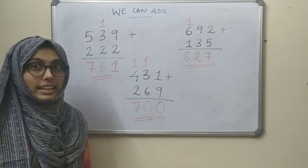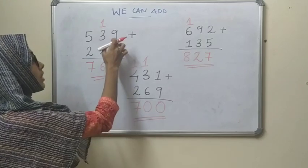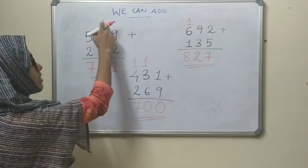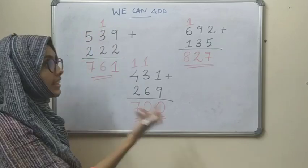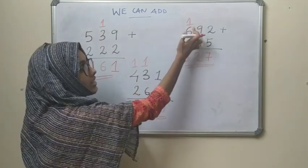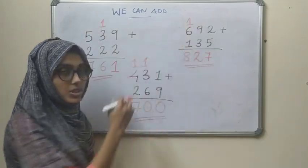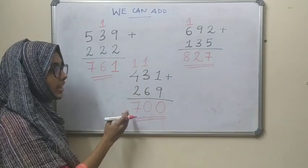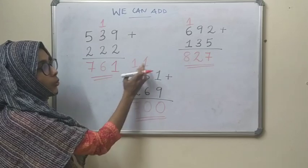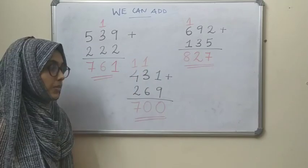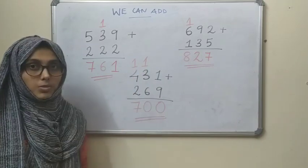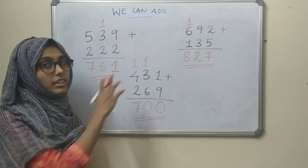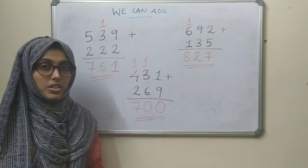So these are the three types of addition. First type: 1 is carried to the tens place. Second type: 1 is carried to the hundreds place. Third type: 1 is carried in both cases. This is a review of the three types of addition.